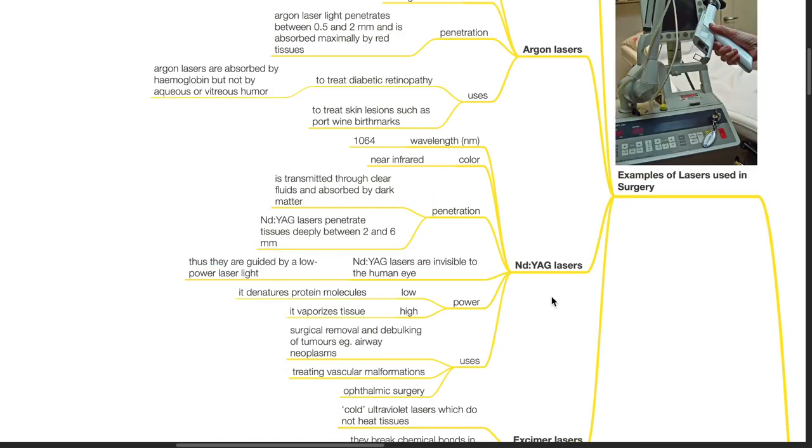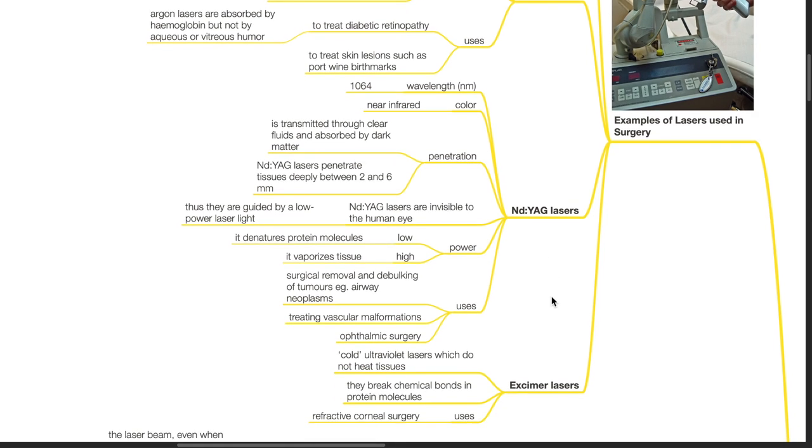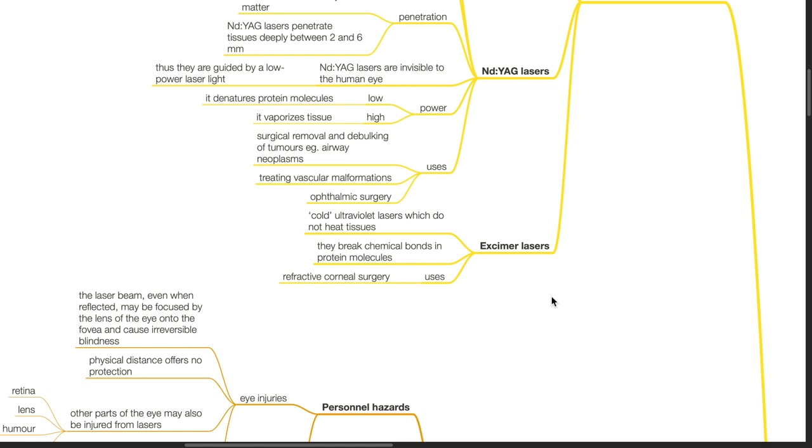NDYAG lasers. The wavelength is 1064 nm. Colour is near infrared. Penetration: It is transmitted through clear fluids and absorbed by dark matter. NDYAG lasers penetrate tissues deeply between 2 and 6 mm. These lasers are invisible to the human eye, thus they are guided by a low power laser light. Low power denatures protein molecules, high power vaporizes tissues. NDYAG lasers are used for surgical removal and debulking of tumors such as airway neoplasms, in treating vascular malformations and in ophthalmic surgery. NDYAG lasers are cold ultraviolet lasers that do not heat tissues. They break chemical bonds in protein molecules and is used during refractive corneal surgery.